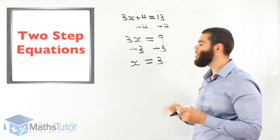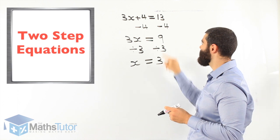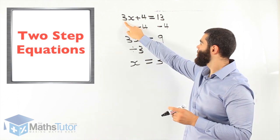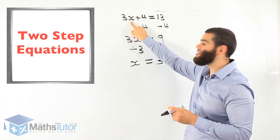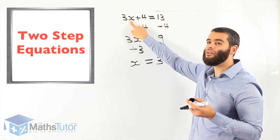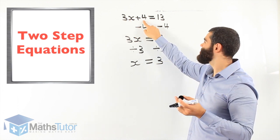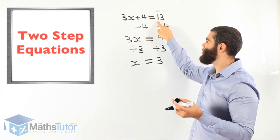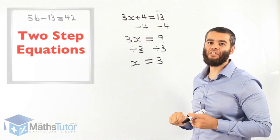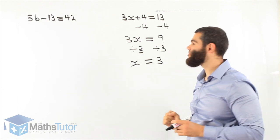Does it work? Let's see. x equals 3. So 3 times x is 3 times 3, which is 9. 9 plus 4 is 13. Yes, it works! Let's do another one.